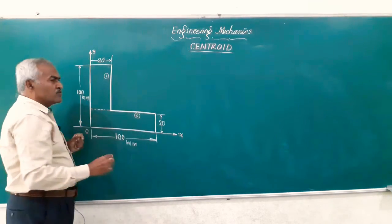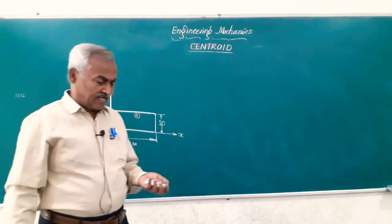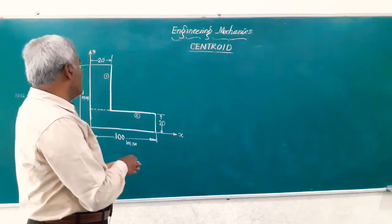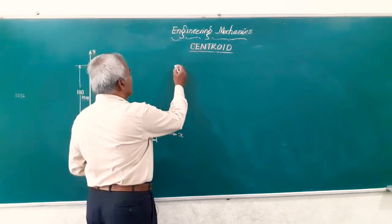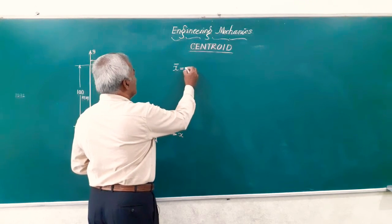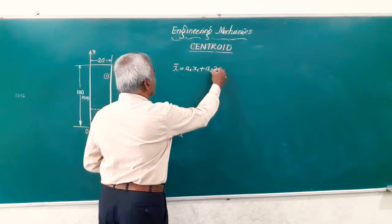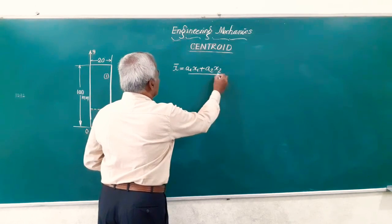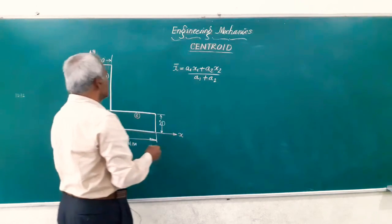There are basically two rectangles in this L-section or the angle section. Friends, you know very well to find out the x bar and y bar the centroid you have the formula given by the formula x bar is equal to a1 x1 plus a2 x2 divided by a1 plus a2.